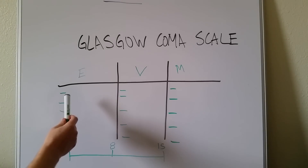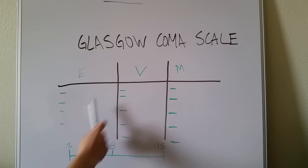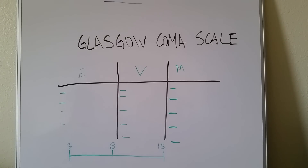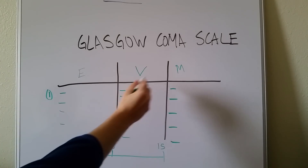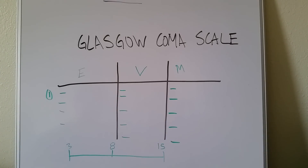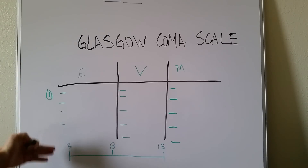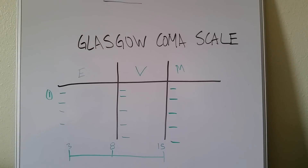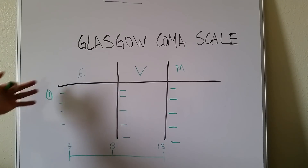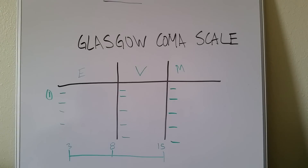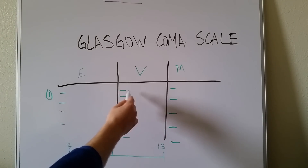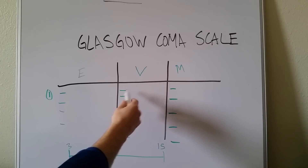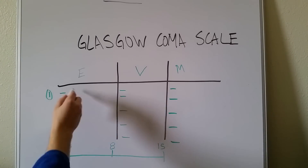To fill in what each category point means, let's start with one point at the top — one for Eyes, one for Verbal, one for Motor. A score of three, which is one, one, one, would be a deceased person. So all you have to think about for the lowest score is what a dead person would do: their eyes would not be open, they would not be making any verbal noises at all, and they would not be moving.